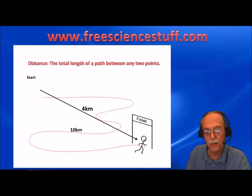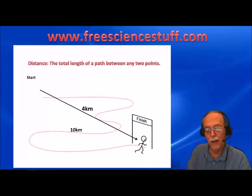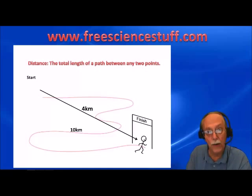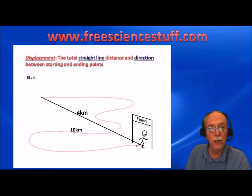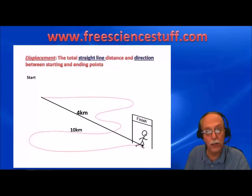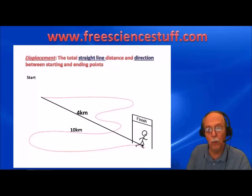But it actually shows something else — not just the straight line distance, but also direction. Notice that this line has an arrowhead on it, and that arrowhead shows direction. Displacement is the straight line distance and direction between the starting and ending points. That line represents his displacement.